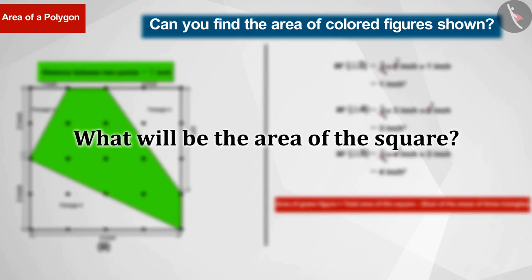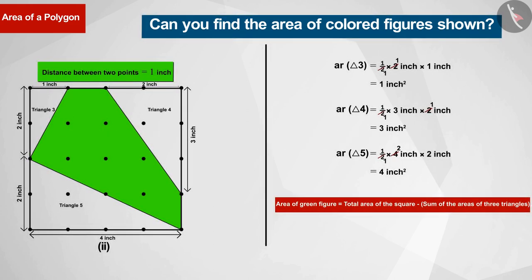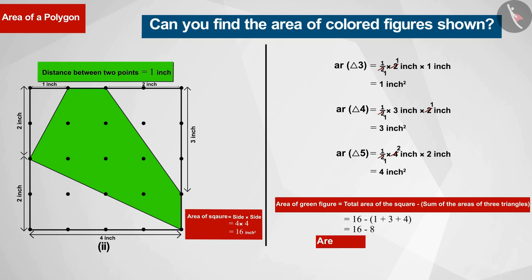Perfect. Since the length of each side of the square is 4 inches, the area of the square will be 16 square inches. With this we get the green area as 8 square inches.